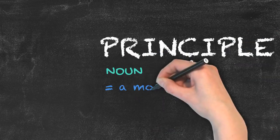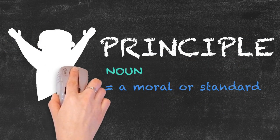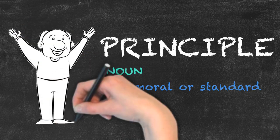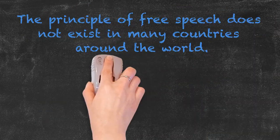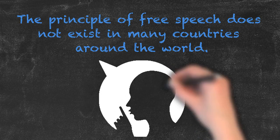Principle, on the other hand, is only used as a noun and describes a moral or standard. An example sentence would be, the principle of free speech does not exist in many countries around the world.